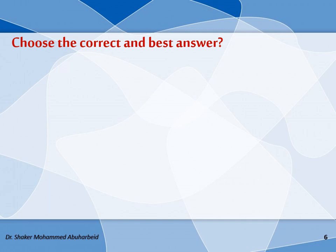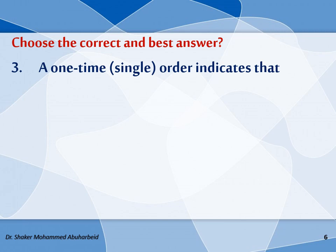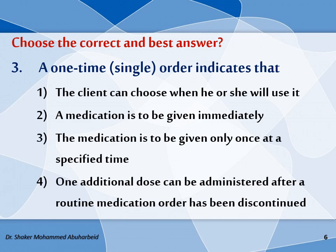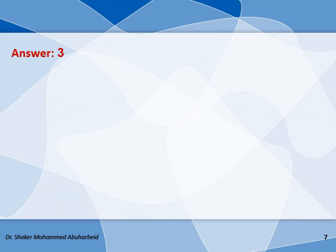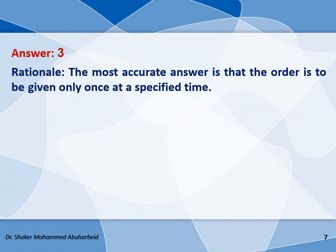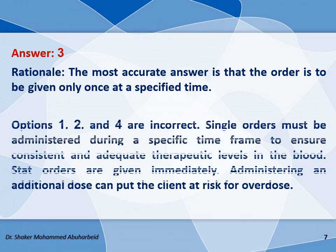Now let us see the third question. A one-time or single order indicates that: first option, the client can choose when he or she will use it; second, a medication is to be given immediately; third option, the medication is to be given only once at a specified time; and the final option, one additional dose can be administered after a routine medication order has been discontinued. The correct answer is number three — the order is to be given only once at a specified time. Single orders must be administered during a specific time frame to ensure consistent and adequate therapeutic levels. Stat orders are given immediately, and administering an additional dose can put the client at risk of overdose.